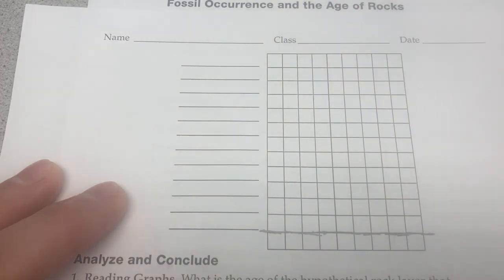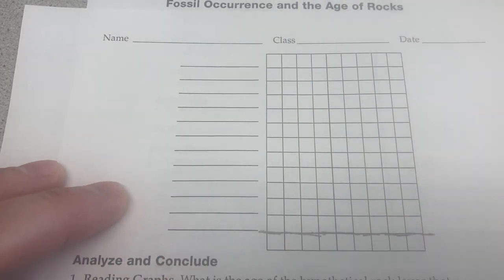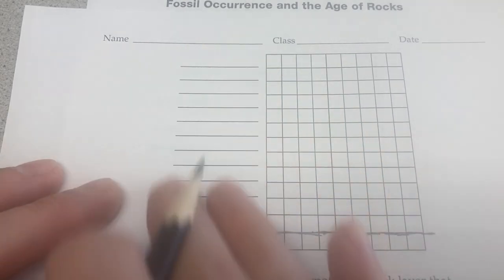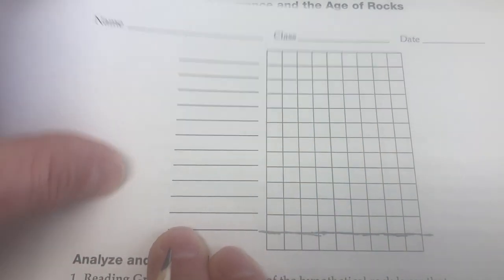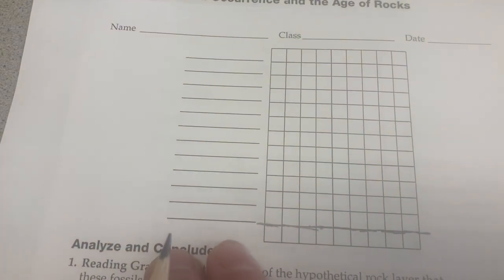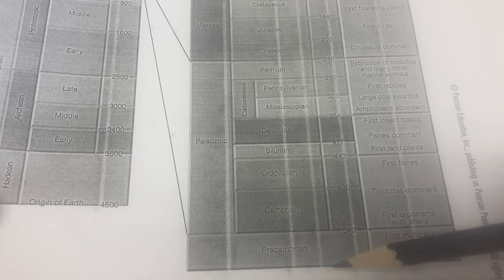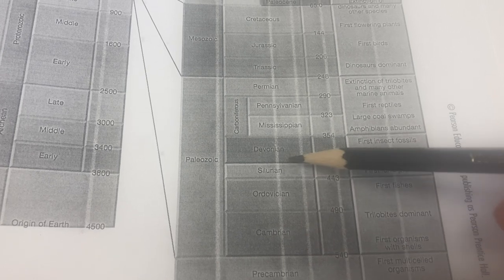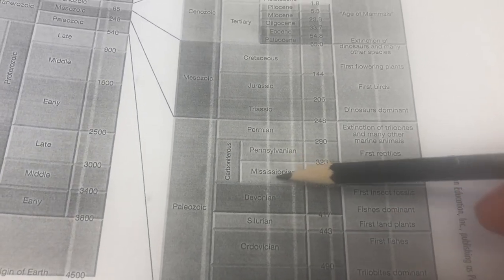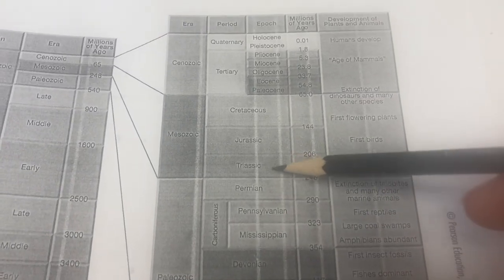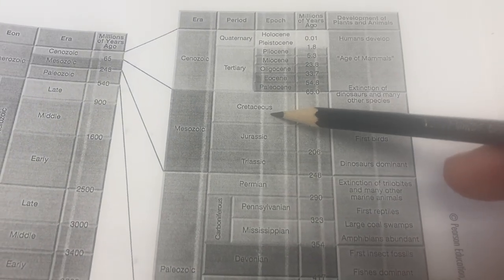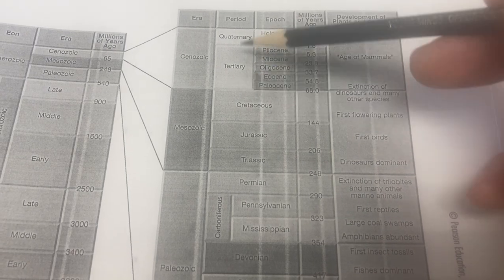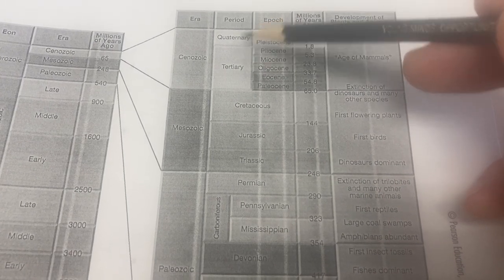Let's label these axes. Going up the y-axis, we're going to put the time periods we're looking at. Starting here with the Precambrian, we go through the Cambrian, the Ordovician, the Silurian, the Devonian. We're going to split the Carboniferous up into the Mississippian and the Pennsylvanian, then the Permian, the Triassic, the Jurassic, the Cretaceous, the Tertiary, and finally the Quaternary, which is the most recent time. Ancient time is at the bottom.